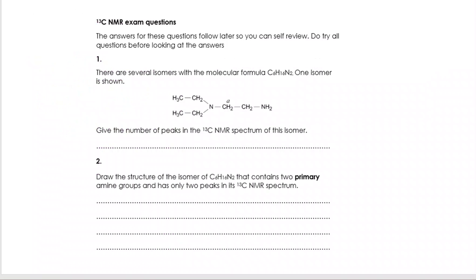So what we're now going to do is deal with some carbon-13 NMR exam questions. There are several isomers with a molecular formula C6H16N2, and one of them has been given. We want to know how many peaks there are in the carbon-13 NMR spectrum of this isomer.